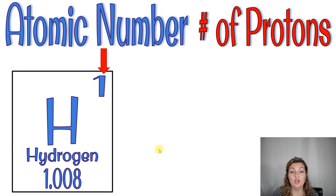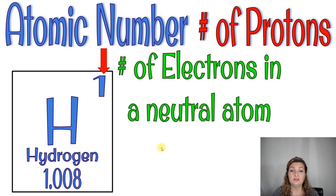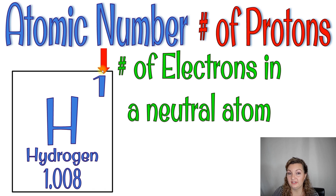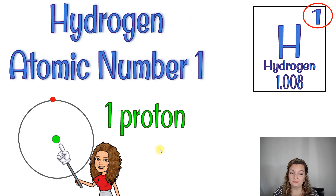The atomic number shows us the number of protons in that atom. What's really cool is if you have a neutral atom, it also shows you the number of electrons. So just by looking at the square on the periodic table, I can tell you that hydrogen has one proton and one electron in a neutral atom. We would have one proton in our nucleus and one electron in our energy shell.